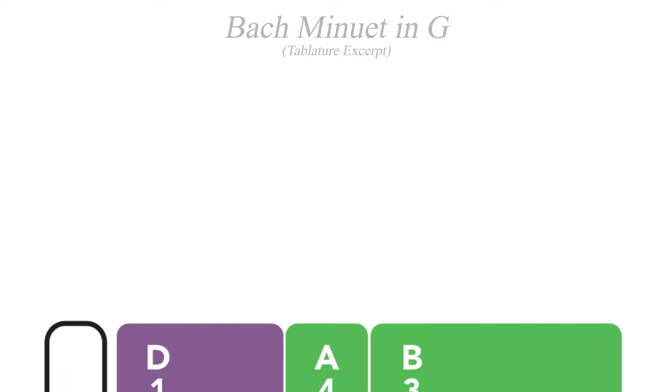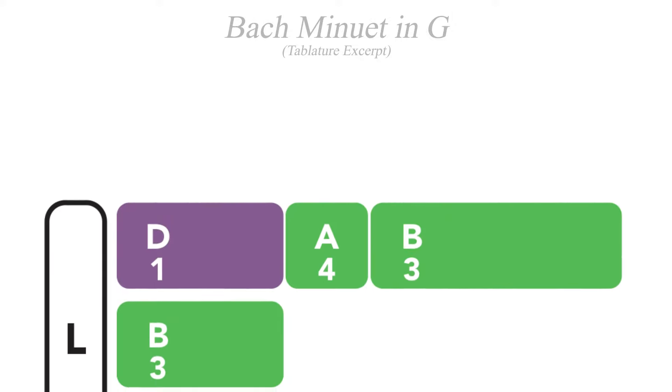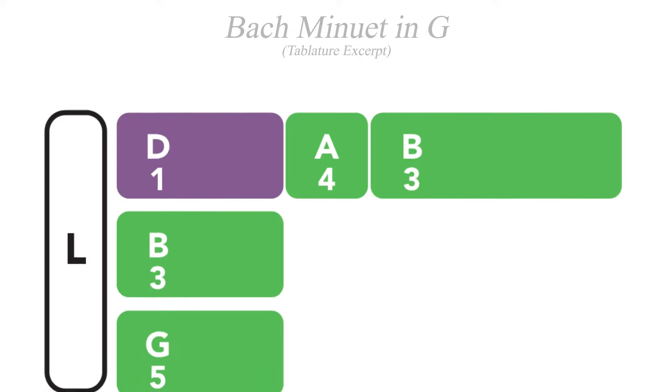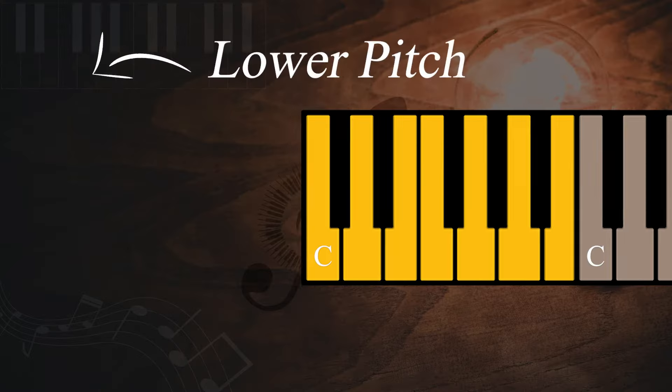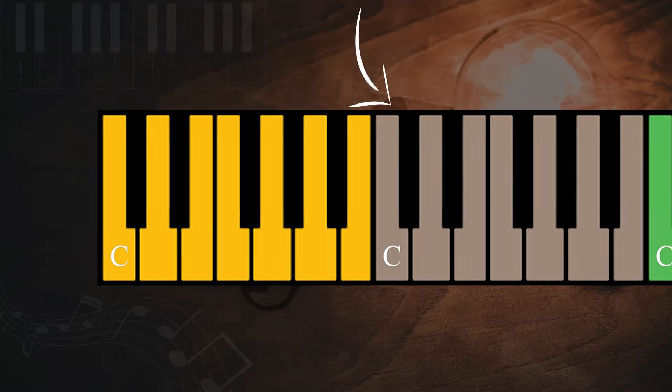The left hand begins with three notes stacked in a column, which means they're played simultaneously. The note that's on the bottom will always be the lowest pitch. When notes are stacked in a column, as we move from the bottom to the top, we're moving from the lowest pitch to the highest pitch — which means on your piano keyboard, we're building from the left to the right.